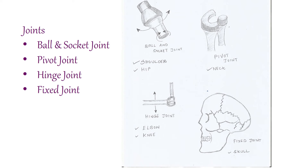These places are called joints. In our body we have certain types of joints: ball and socket joint, pivot joint, hinge joint, and fixed joint — just some examples.